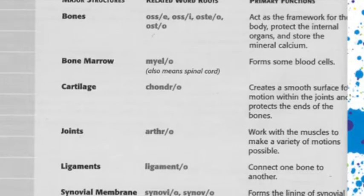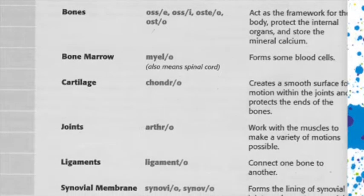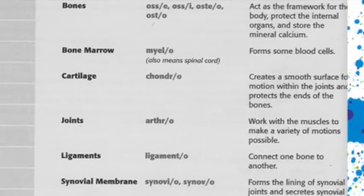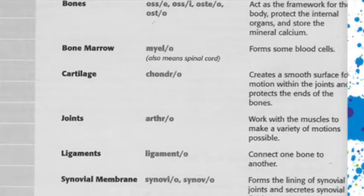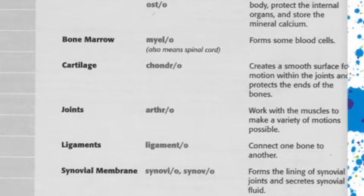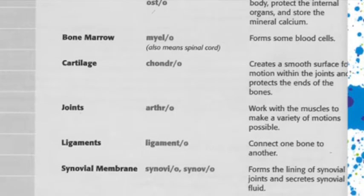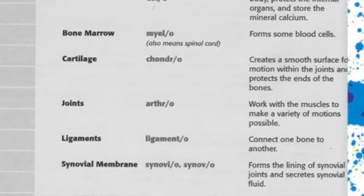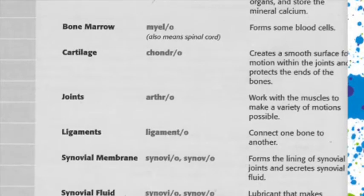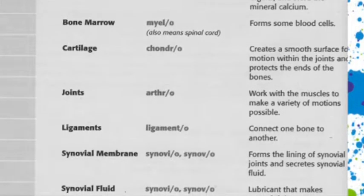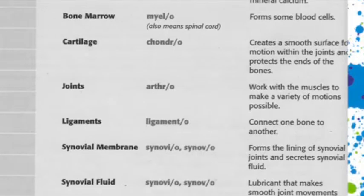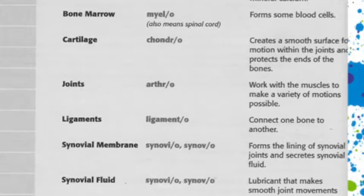Cartilage creates a smooth surface for motion within the joints and protects the ends of bones. You'll know we're talking about cartilage when you see a medical term with the word root chondro. Joints are where two bones come together and work with the muscles to make a variety of motions possible. When we use the word root arthra or arthro, we're discussing joints.